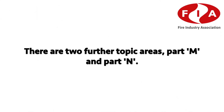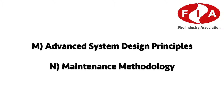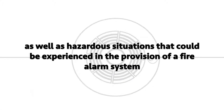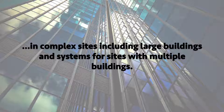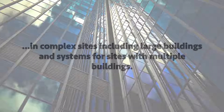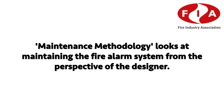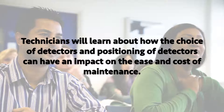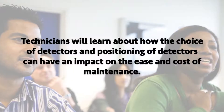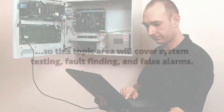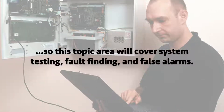There are two further topic areas: Part M and Part N. M covers advanced system design principles, whilst N covers maintenance methodology. Advanced system design principles helps designers become aware of potential reliability problems as well as hazardous situations that could be experienced in the provision of a fire alarm system in complex sites including large buildings and systems for sites with multiple buildings. Learners will also discover how these risks can be reduced or avoided by specifying the appropriate equipment. Maintenance methodology looks at the maintaining of the fire alarm system from the perspective of the designer. Technicians will learn about how the choice and positioning of detectors can have an impact on the ease and cost of maintenance. Fire alarm designers need to be aware of the impact that their choices are making to the system and to its ongoing maintenance, so this topic area will cover system testing, fault finding and false alarms.